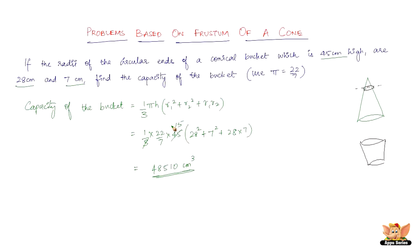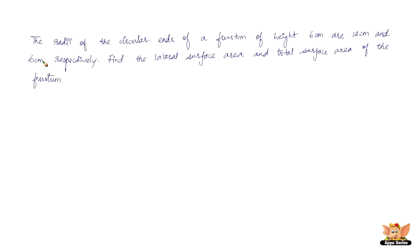Before concluding, let us quickly solve another problem based on the frustum of a cone. The problem reads: the radii of the circular ends of a frustum of height 6 cm are 14 cm and 6 cm respectively. Find the lateral surface area and the total surface area of the given frustum. So r1 = 14 cm, r2 = 6 cm, and height h = 6 cm.